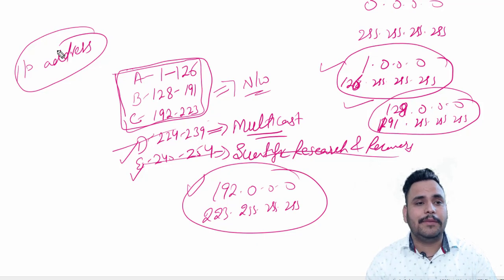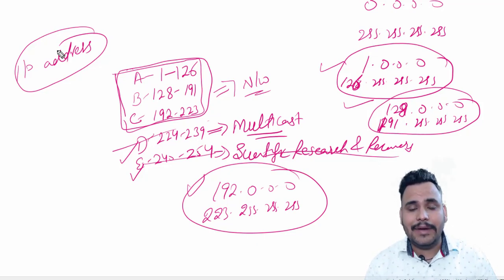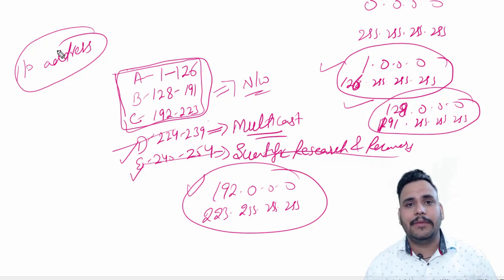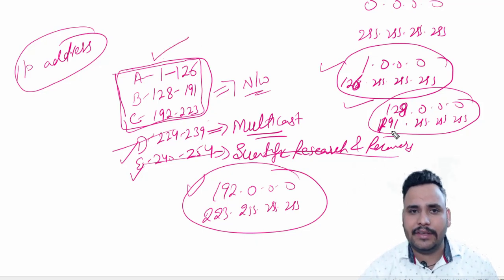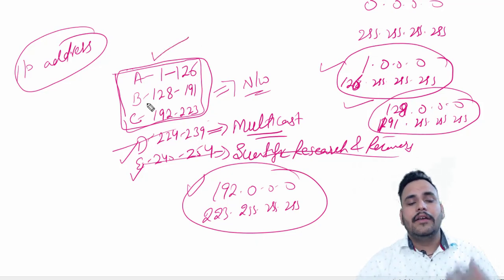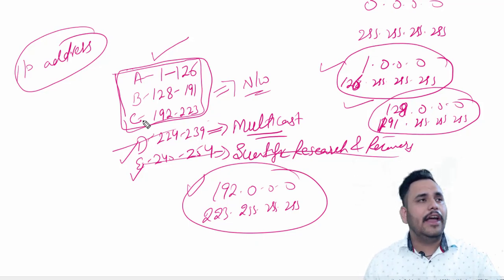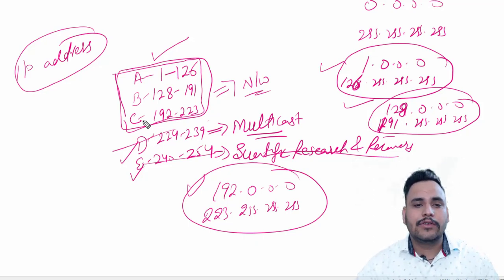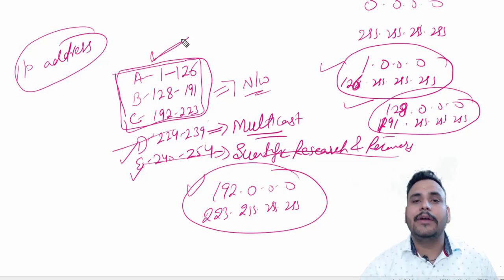In the next video we are going to discuss about subnet mask and fixed-length subnet mask, because an IP address is only a logical address of a PC, but we have to define network ID and host ID first and create LAN and WAN. So we need to discuss about subnet mask in the next video. Thank you.